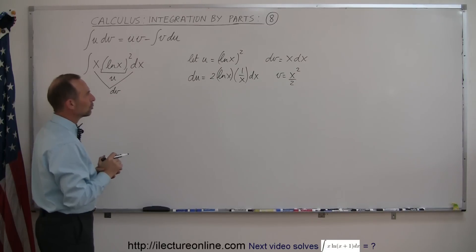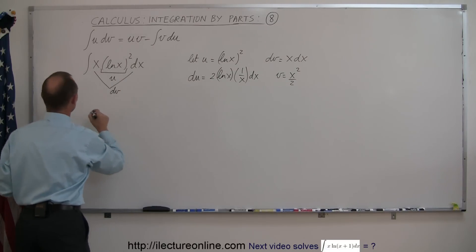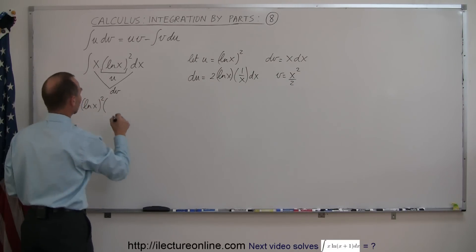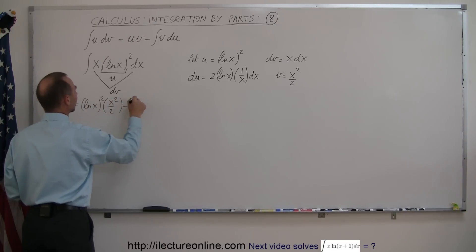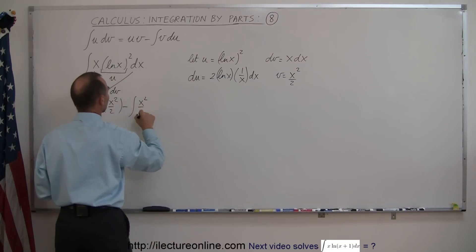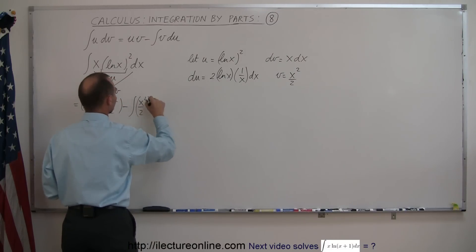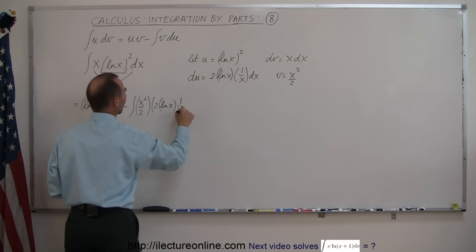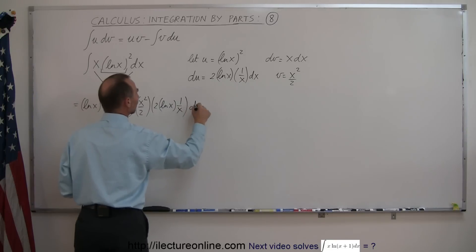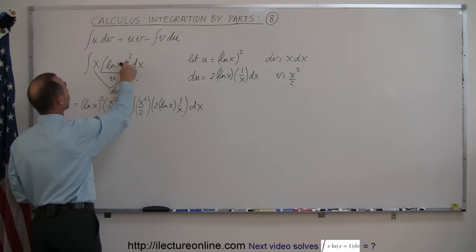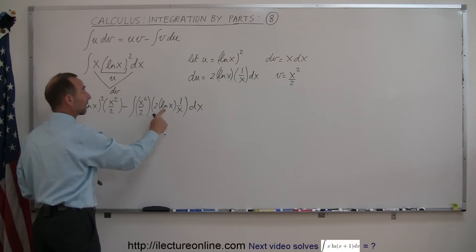Now we have u, v, du, dv — we're ready to plug it in. This now becomes equal to u, which is the natural log of x quantity squared, times v, which is x squared over 2, minus the integral of v du. Our v is x squared over 2, and our du is 2 times the natural log of x times 1 over x times dx. My suspicion was correct — we turned something with the natural log of x squared into something with the natural log of x to the first power.